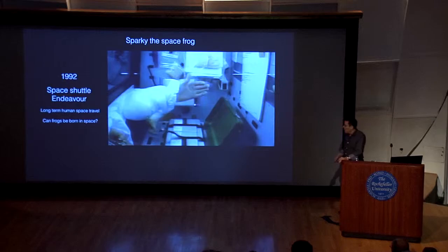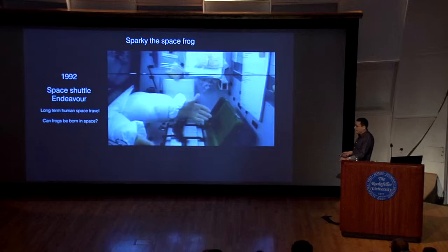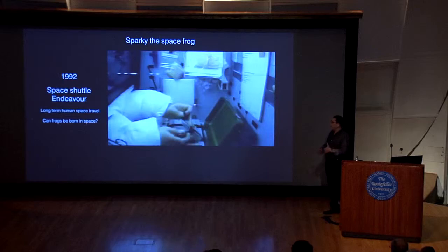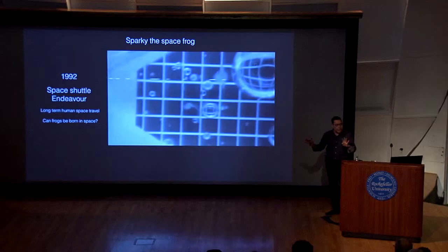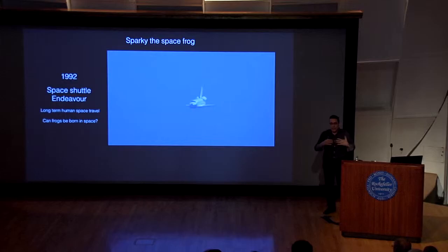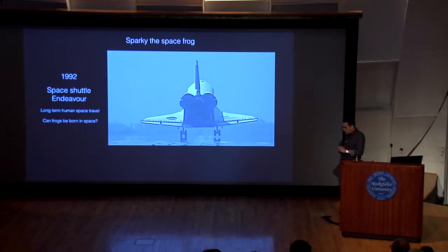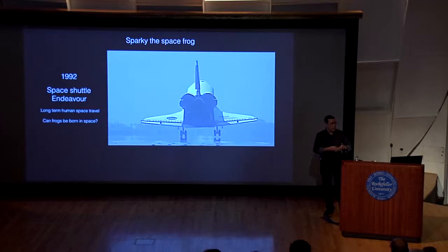They did an amazing experiment. This is Sparky in space. It's not very gracious — this is not a ballet in space — but she's doing good. The most amazing thing is that she can lay eggs and make tadpoles, all in space, not on planet Earth. These tadpoles are perfectly fine; they look exactly like any other tadpoles you will find on planet Earth. And that tells you something very interesting — for the astronaut, it means that yes, it is possible to generate life for humans if they were to stay a long, long time in space.